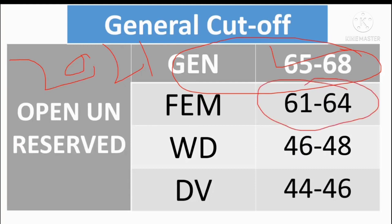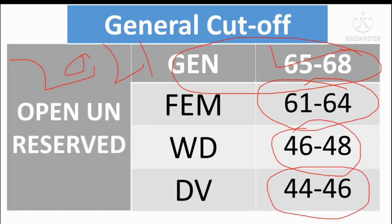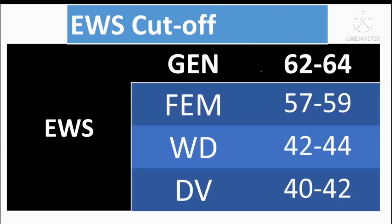The SC female cut off is 46-48. The divorcee category is 44-46. The EWS category expected cut off is 62-64. The OBC female category is 57-59.